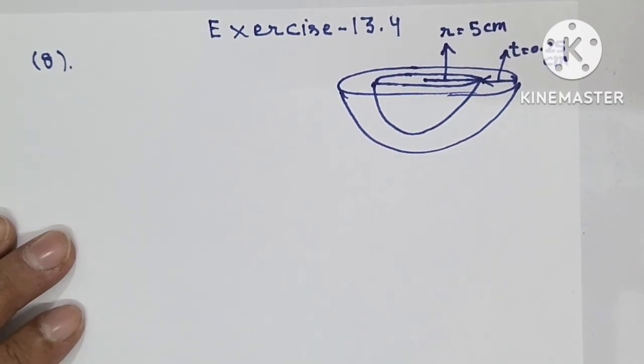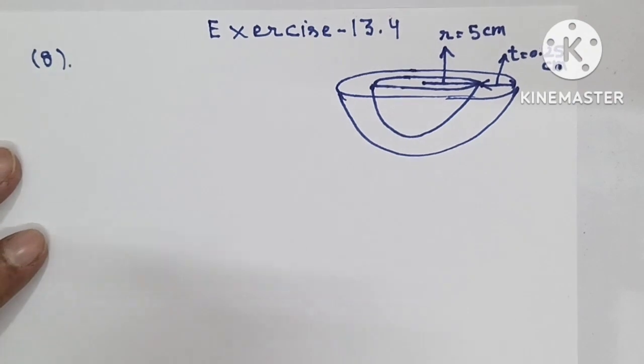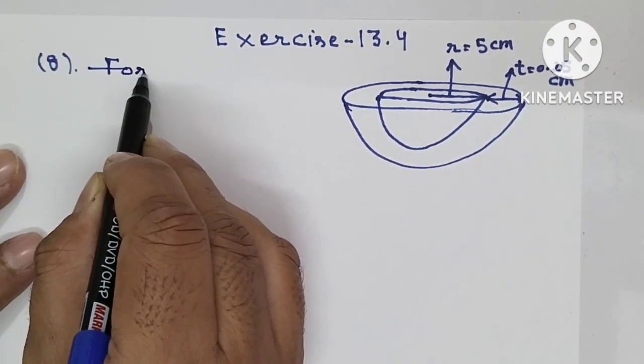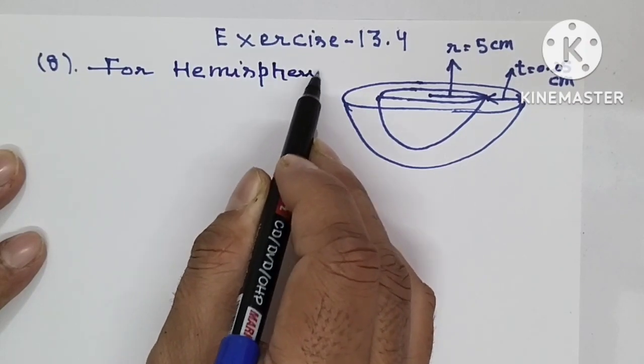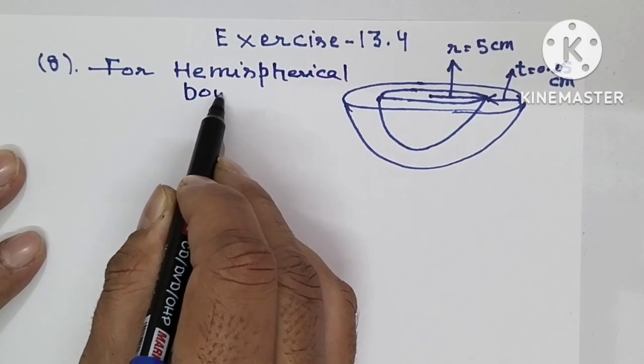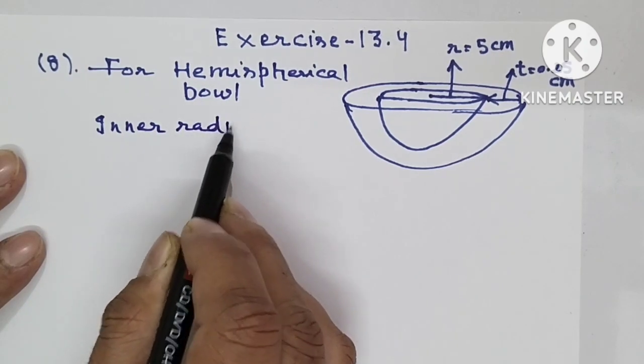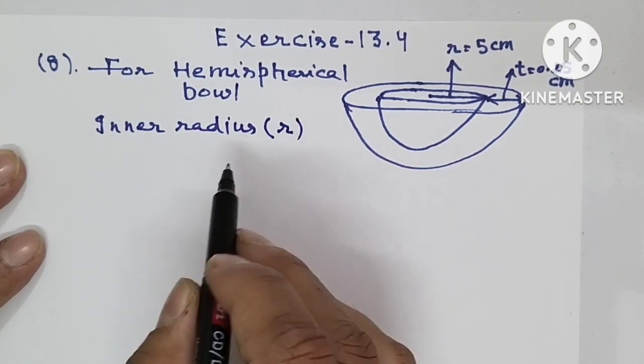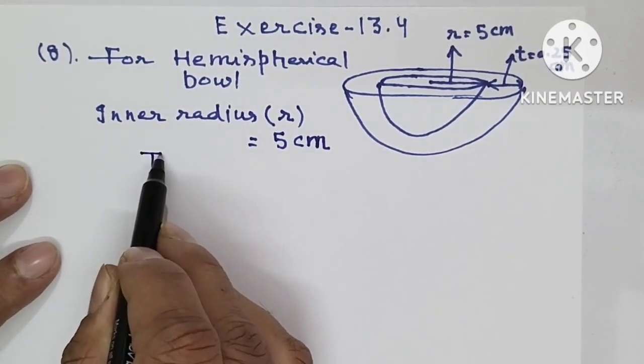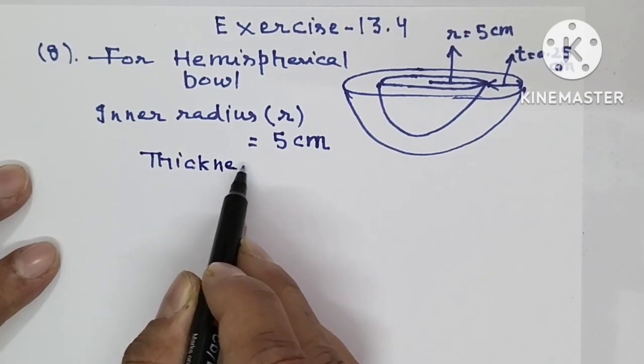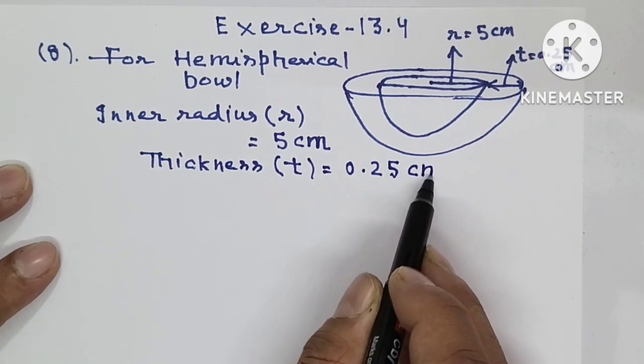You have to find the outer curved surface area of the bowl. So I will write for hemispherical bowl: Inner radius, that we have denoted by small r, is equal to 5 centimeter. Then thickness t, that is equal to 0.25 centimeter.